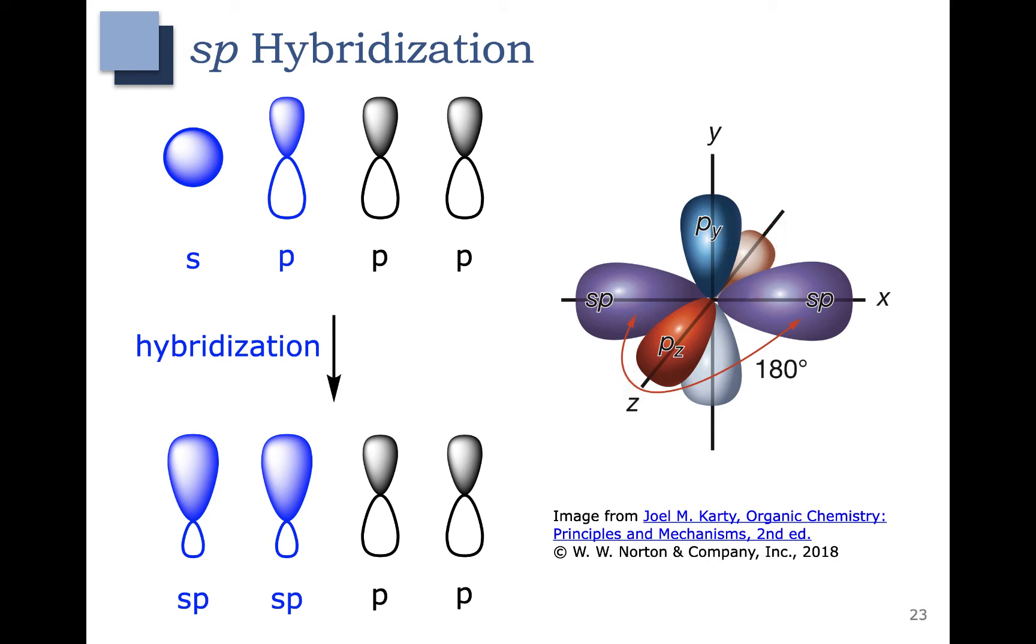Here's one of the p orbitals that will be used to form a pi bond, and here's another p orbital that will be used to form a second pi bond.